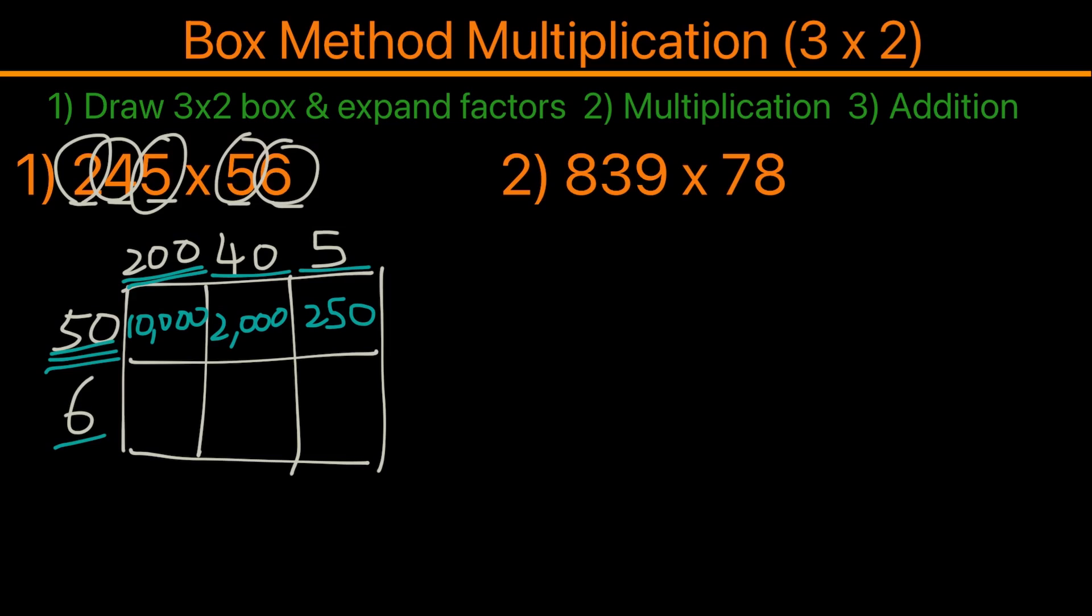Next we're gonna take the 6 and the 200 and multiply them together, and 200 times 6 is 1,200. Next we have 40 times 6, and that equals 240. Next we have 6 times 5, and that equals 30.